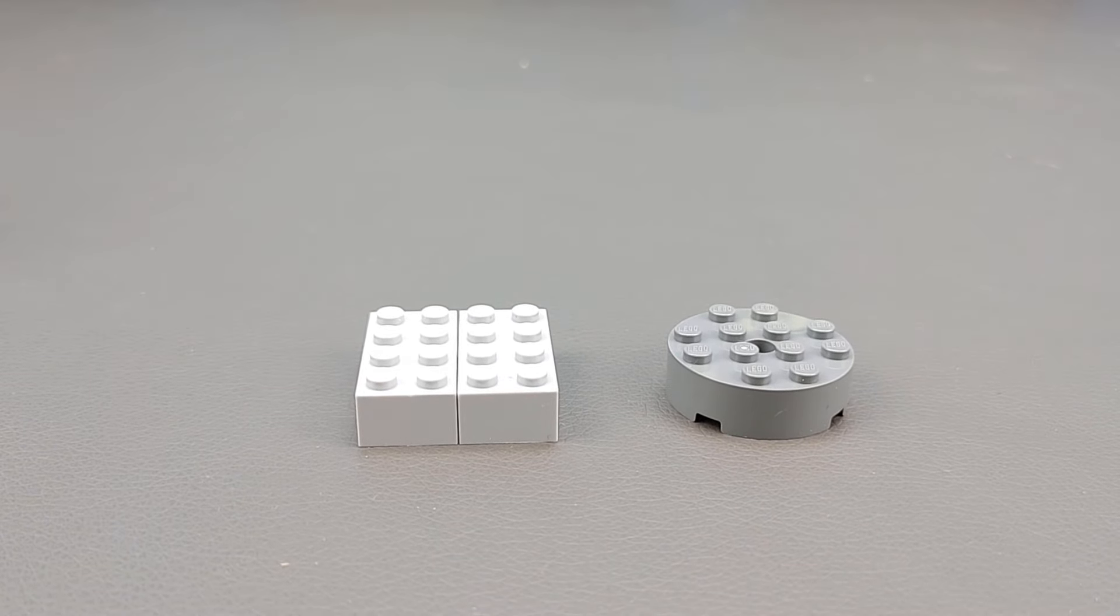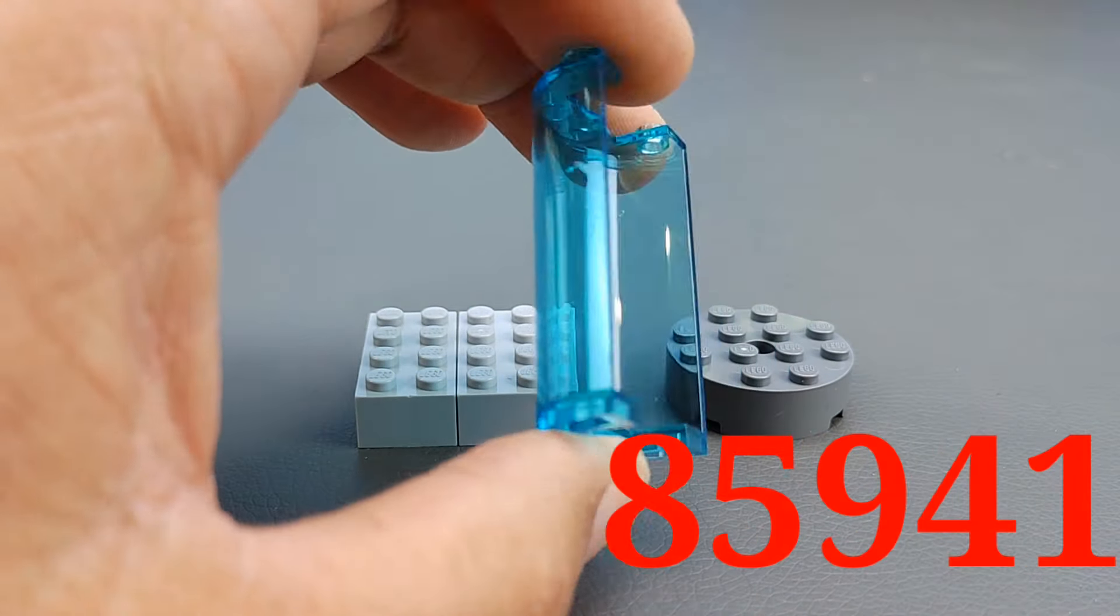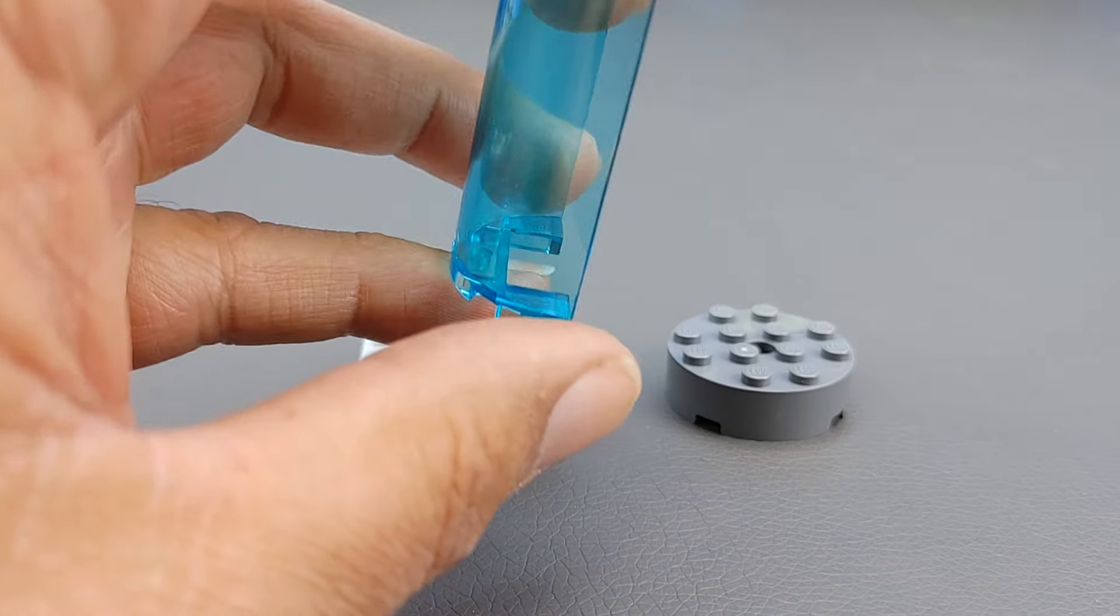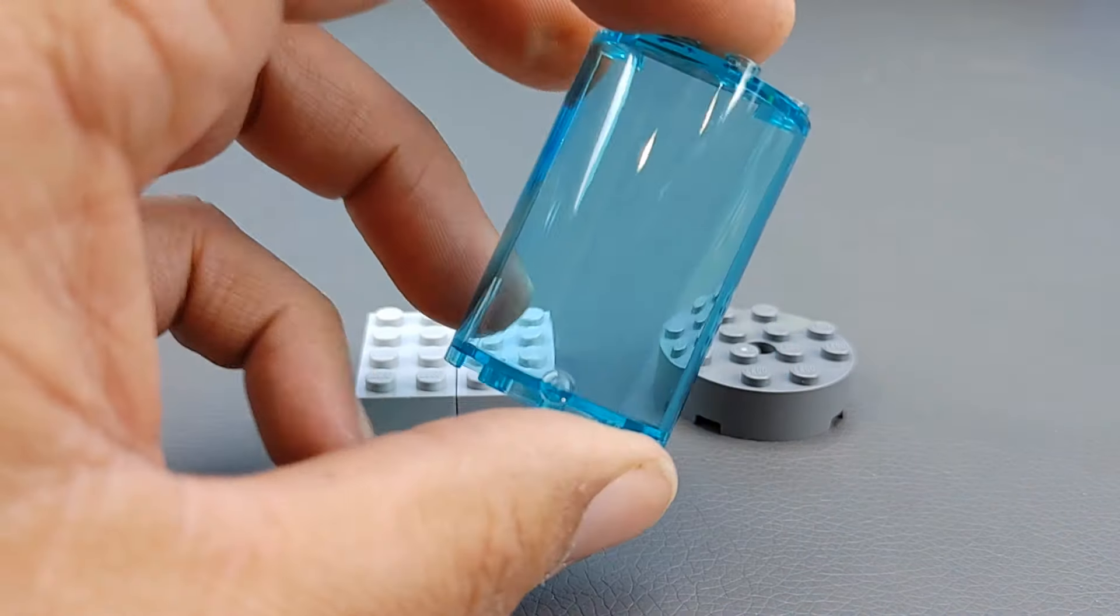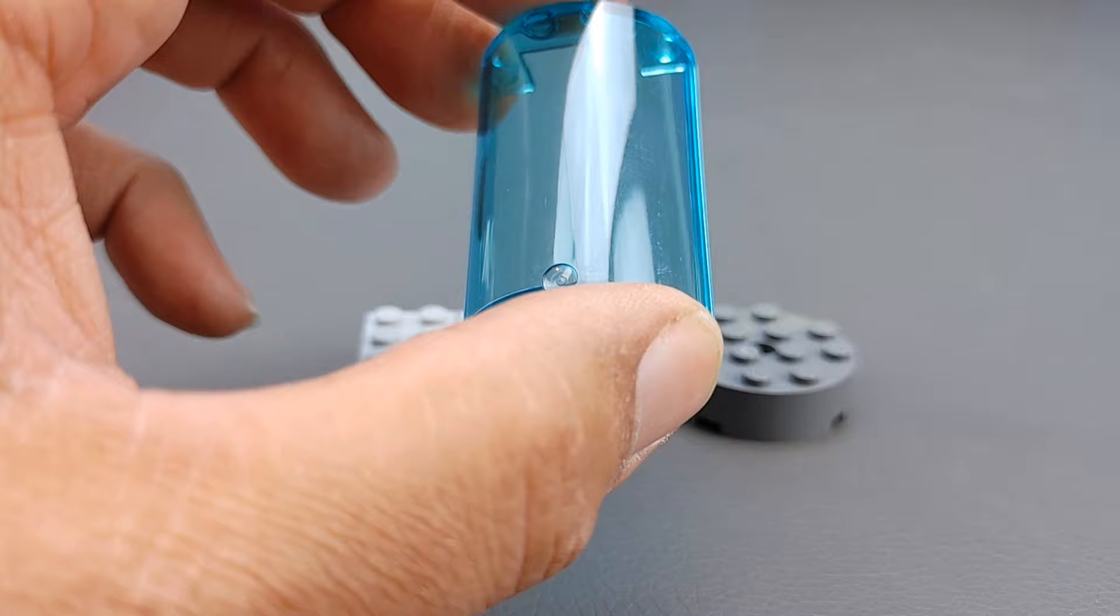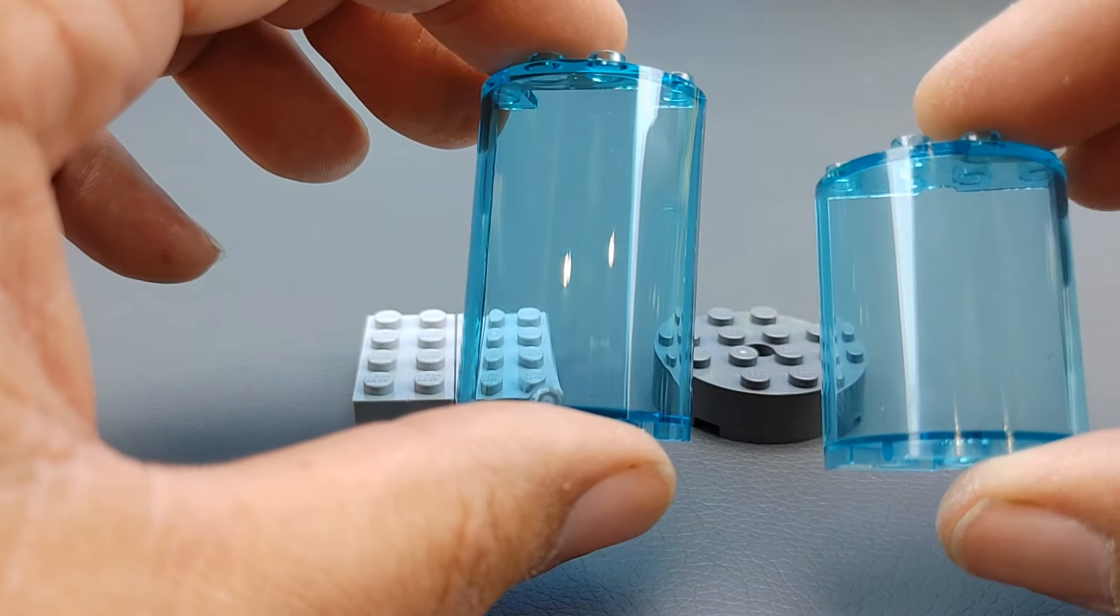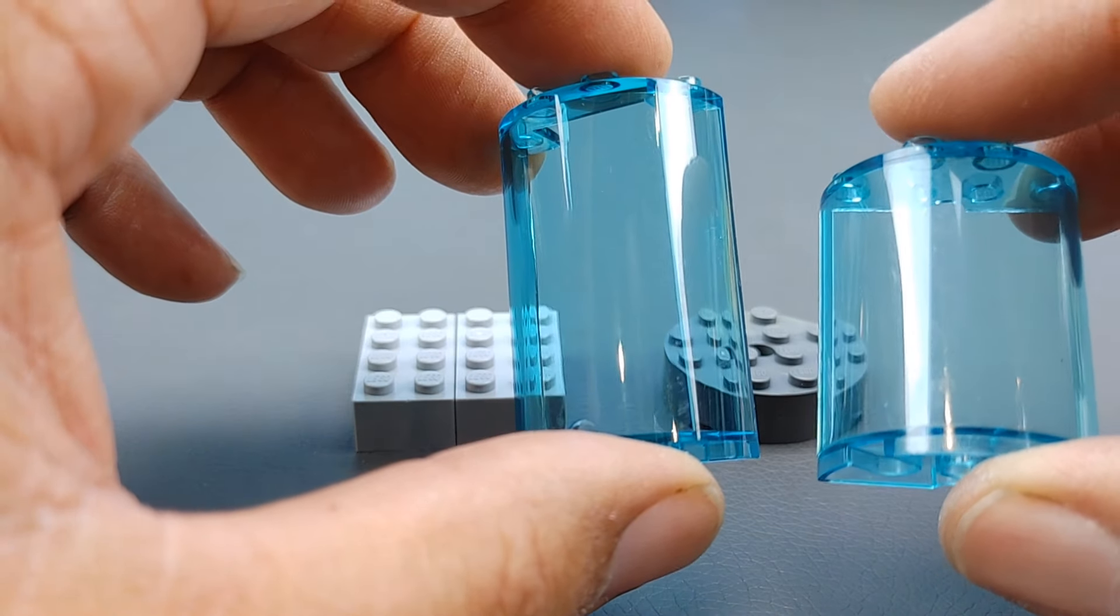The next most important piece though is you need to know what size of these to use. This is a 2x5 half round piece. Now a lot of people, when they look at my fish tank, you would automatically assume it's this little guy here, which is a 2x4. And it's not, it's a 2x5.